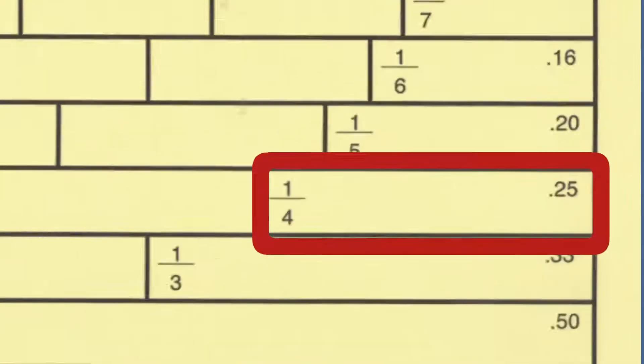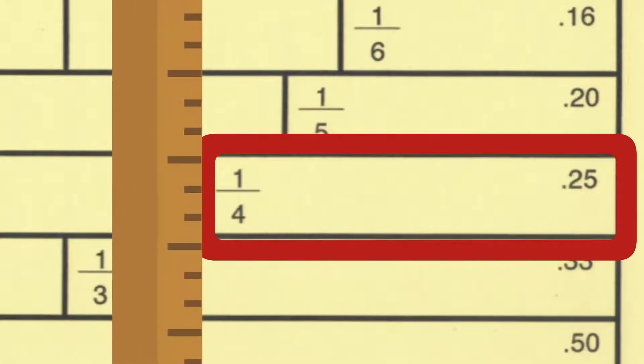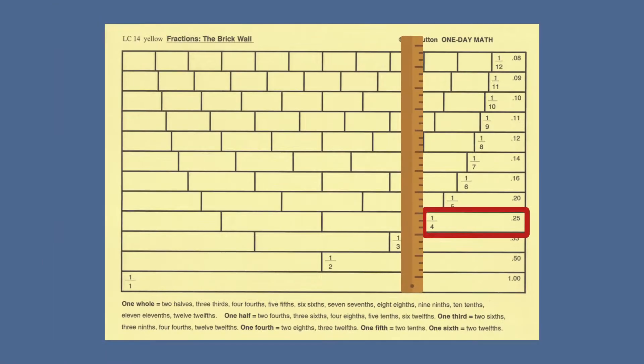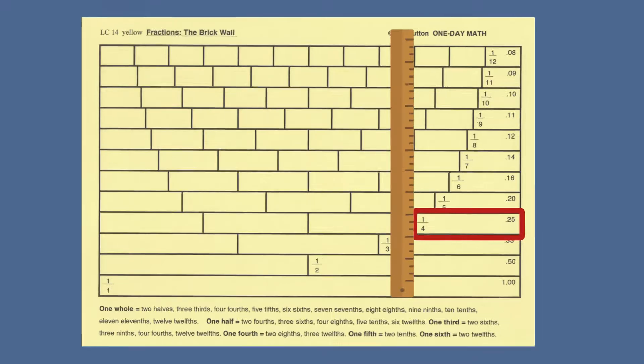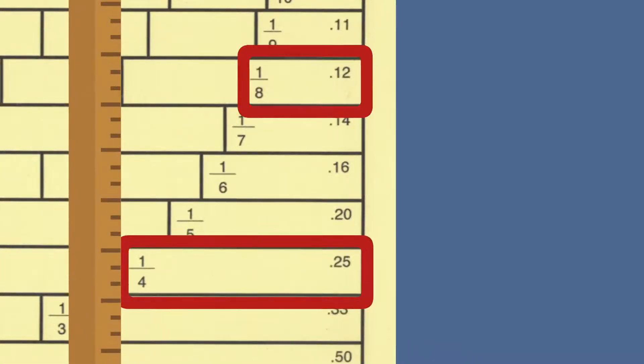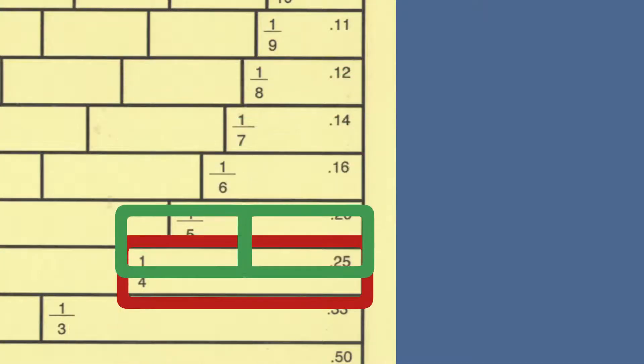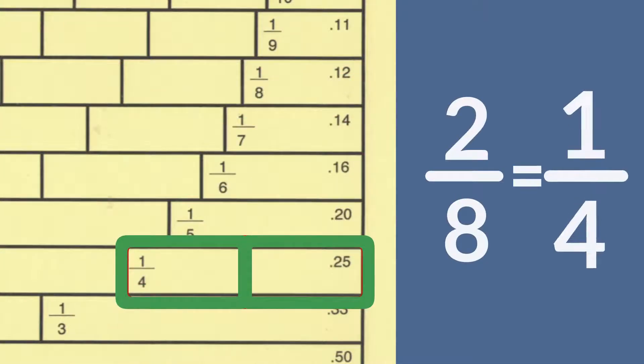Look at the brick labeled one-fourth. Put something on the left edge of this brick, going from the top of the brick wall to the bottom of the brick wall. You can use a ruler going up and down, or the edge of another lesson card. Now look at the brick labeled one-eighth, and the one-eighth brick that is next to it. You can see that two-eighths equals one-fourth.